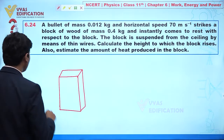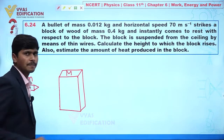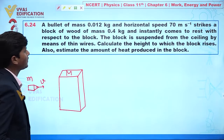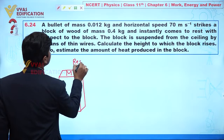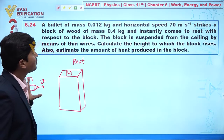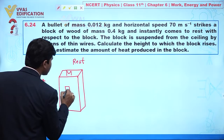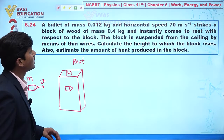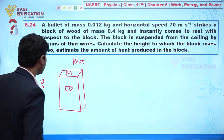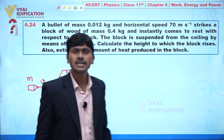The mass of the bullet is small m and the mass of the wooden block is capital M. The bullet is moving with velocity small v, and the wooden block is at rest. When the bullet is embedded inside the wooden block, both come to rest with respect to each other, meaning both move with a common velocity.